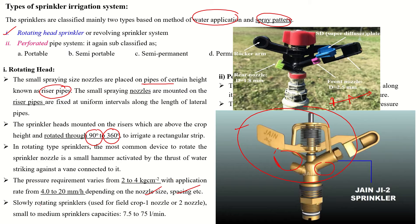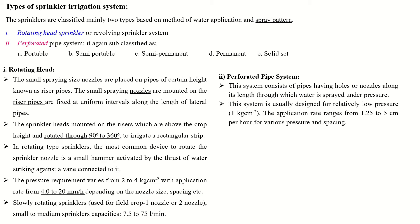This slowly rotating sprinkler can have one nozzle or two nozzles depending on your requirement. The medium discharge of the sprinkler is 7.5 to 75 liters per minute. These are the main components of the sprinkler system.